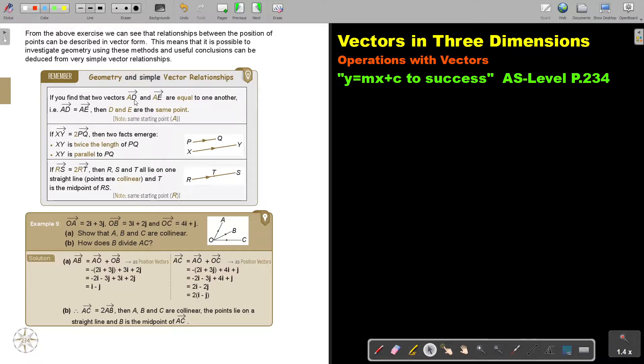If you find that two vectors, AD and AE, are equal to one another, AD equals AE, then D and E are the same point, because they both start at A. Note that the starting point is A. If XY equals 2PQ, then two facts emerge. XY is twice the length of PQ. So XY is the long one. Two PQs will be XY. XY is parallel to PQ.